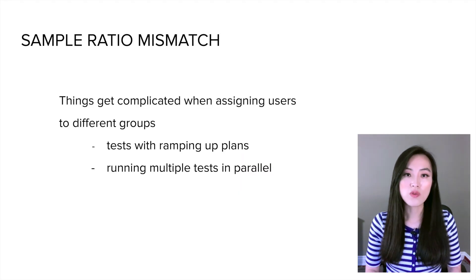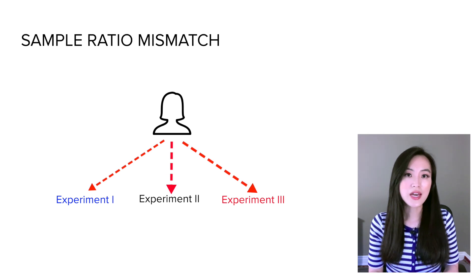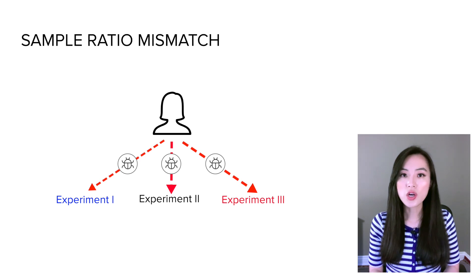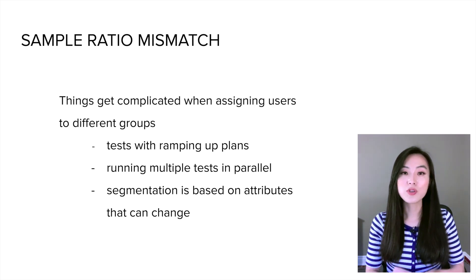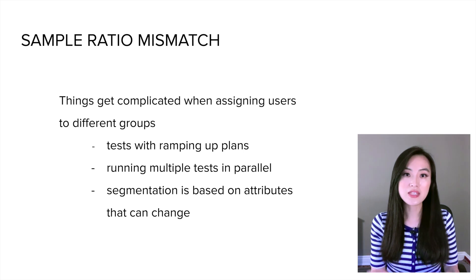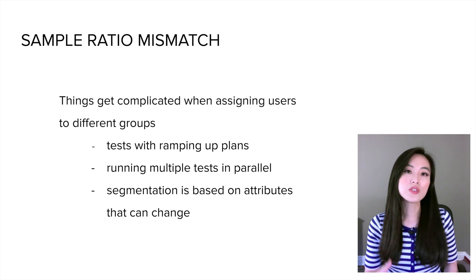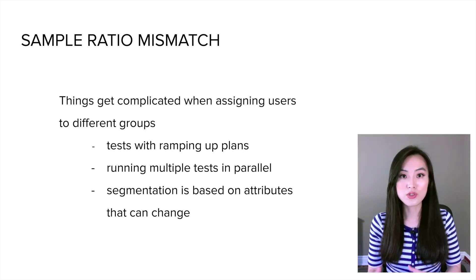Things also get complicated when running multiple experiments in parallel, as one user might be assigned to multiple experiments — bugs and errors are more likely to occur than when running one experiment at a time. Another potential issue is if we are looking at a particular segment of users where the segmentation is based on attributes that can change over time, such as location. People may move to a different geographic location, resulting in bias in allocating users to groups.